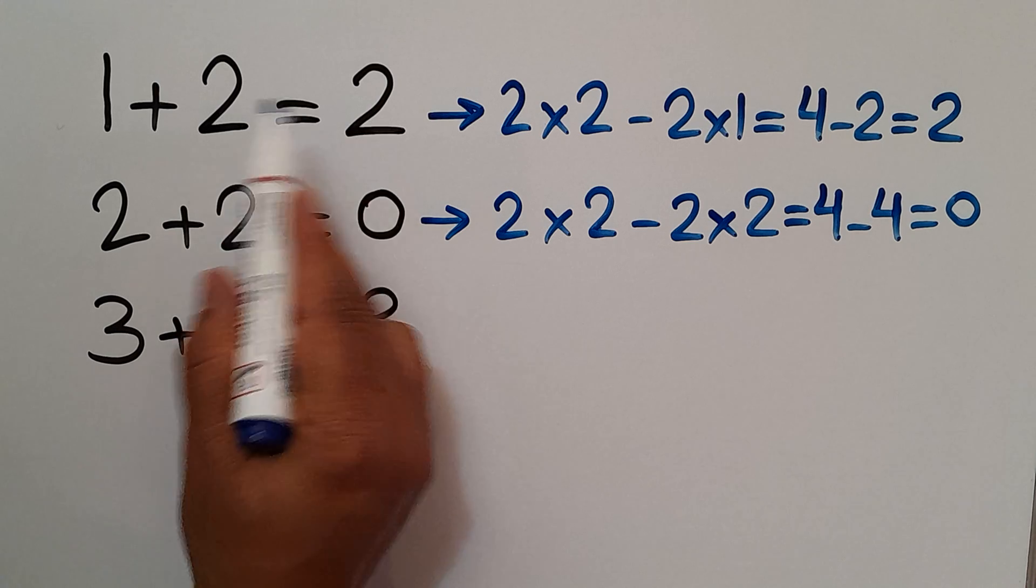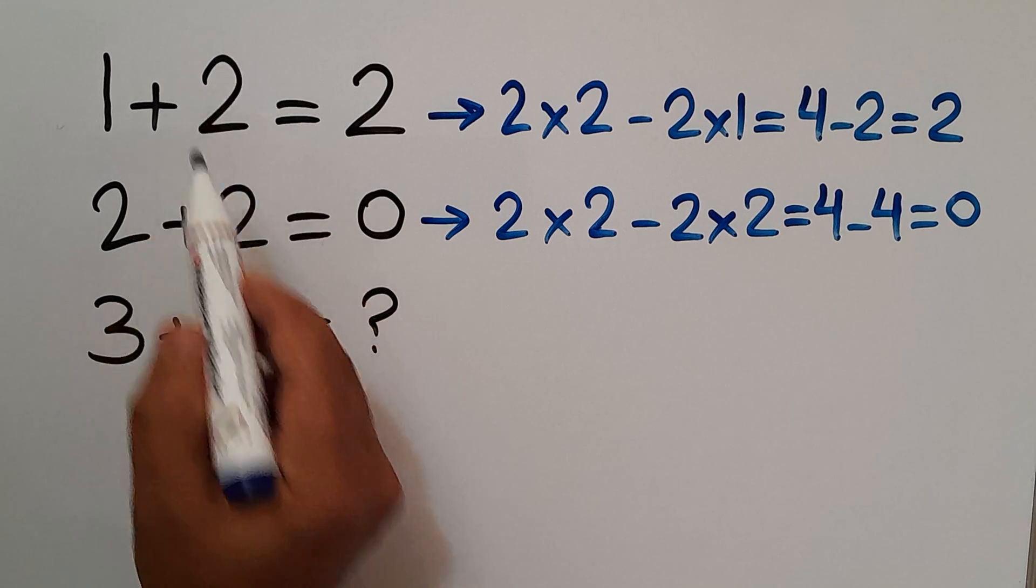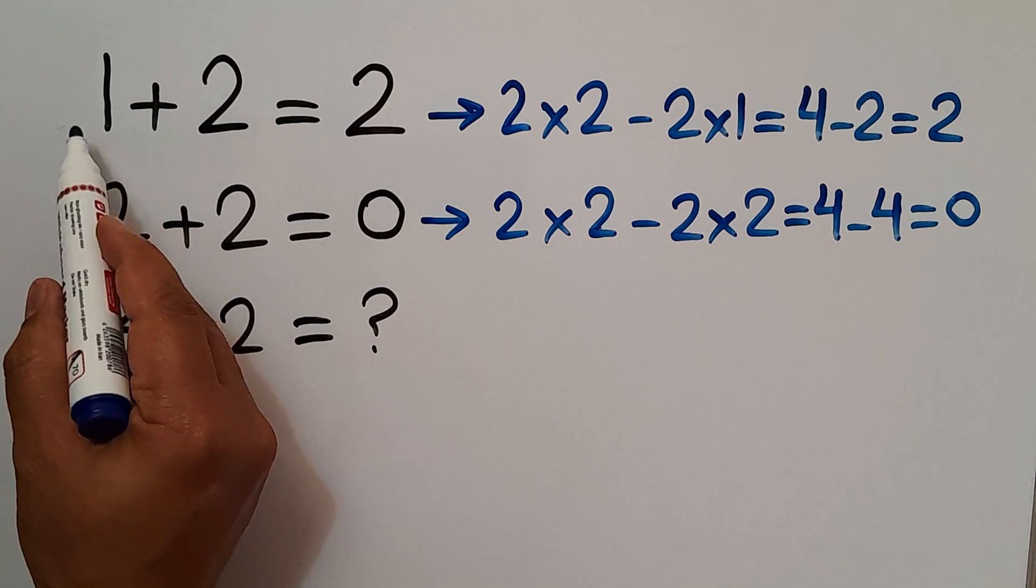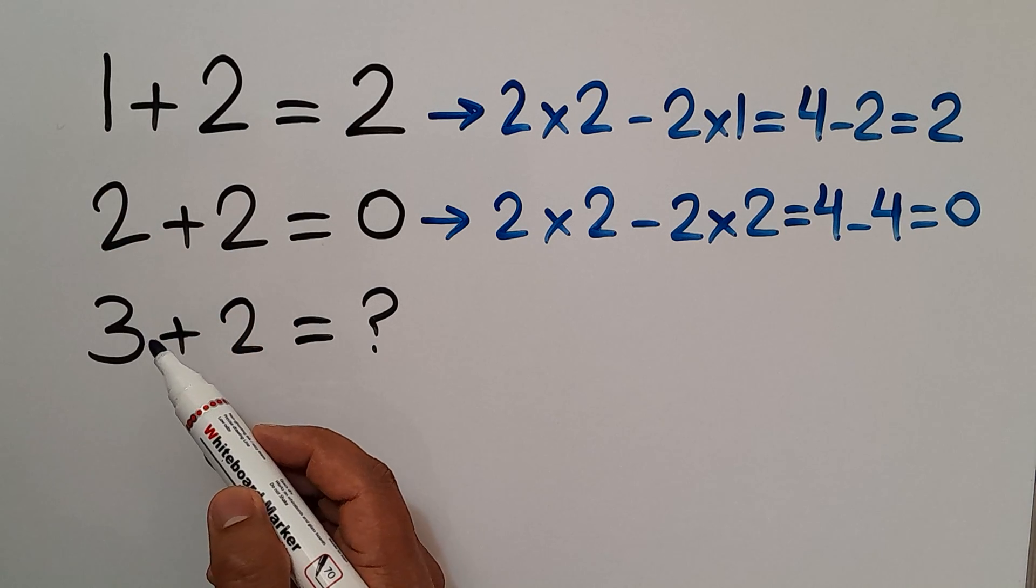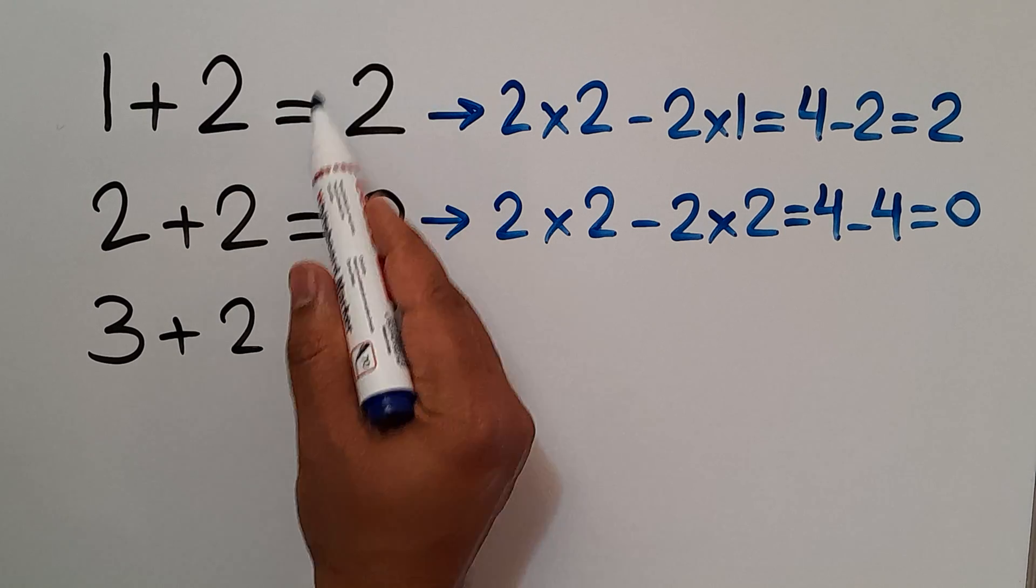Therefore, the pattern that exists here is 2 times the second number minus 2 times the first number gives us the third number, or the right-hand side number.